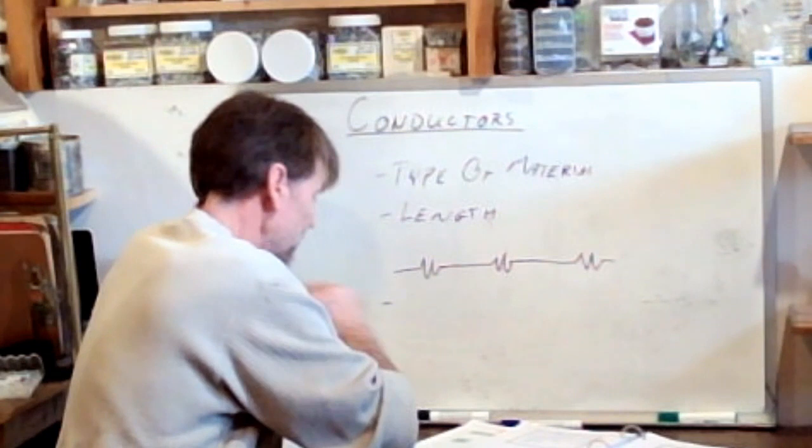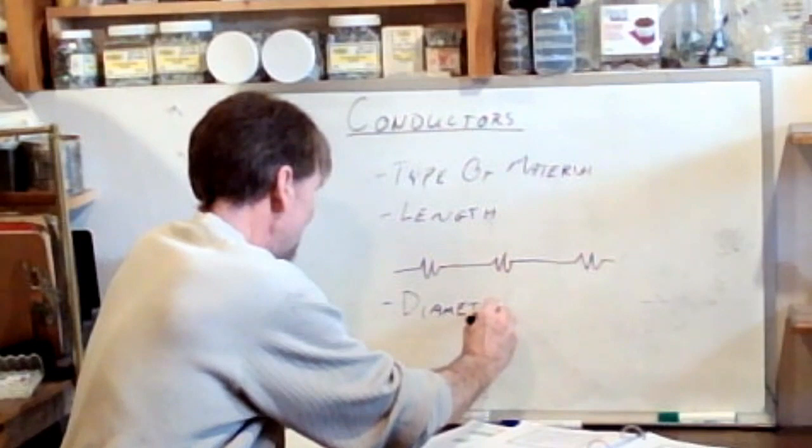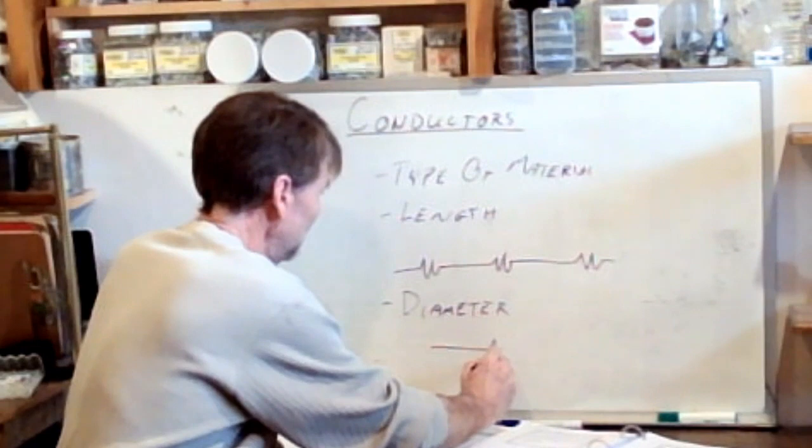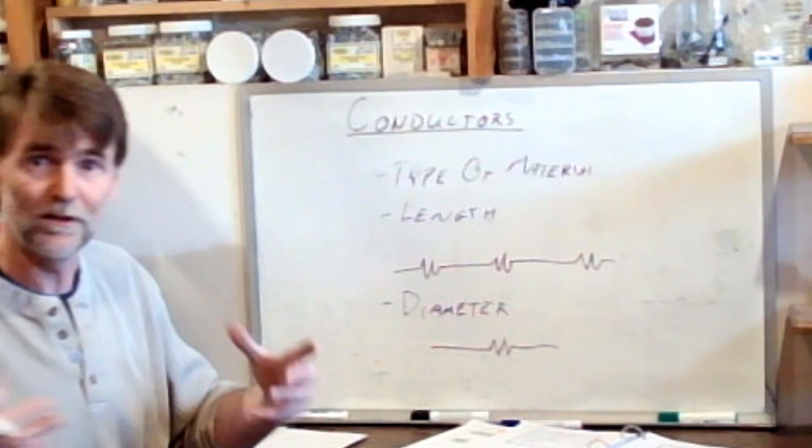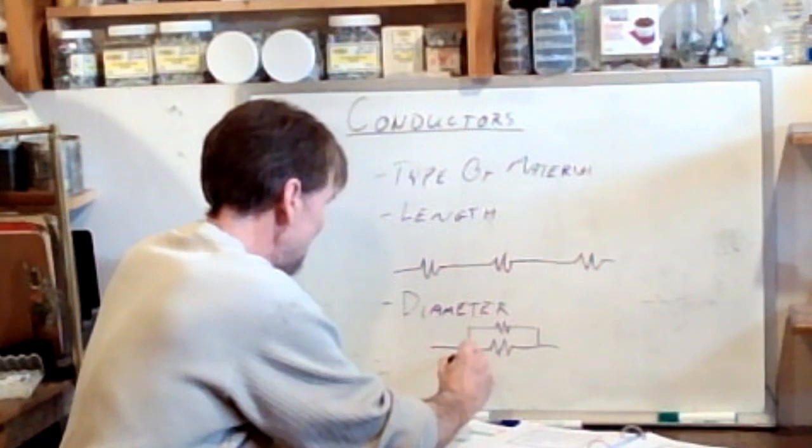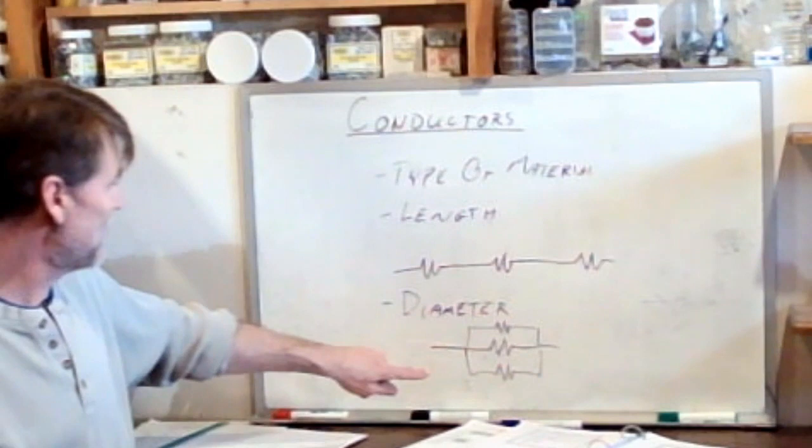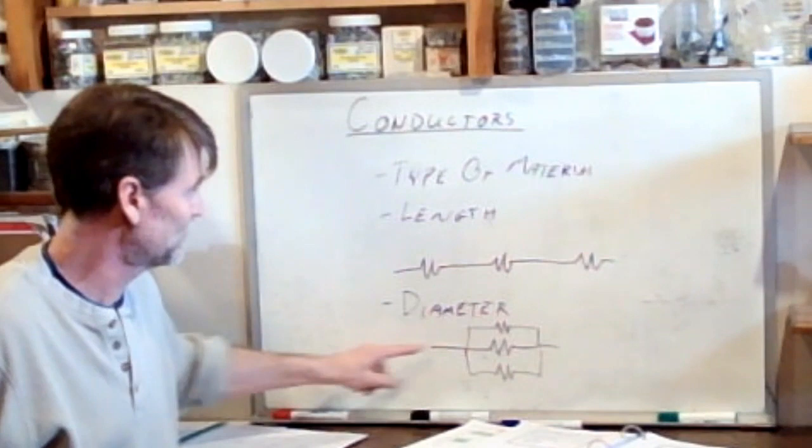The diameter is also a factor. Now the diameter works in the exact opposite fashion. So here's your conductor, offers some resistance. If we make that conductor bigger, it has a larger diameter, then it has the effect of connecting resistors in parallel. Well, what happens in parallel? The total resistance decreases because we've offered additional paths for current to flow.